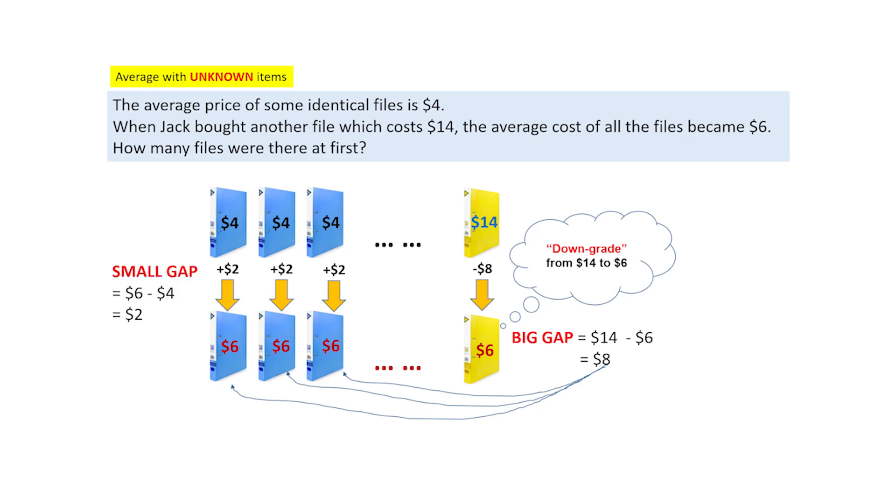When $8 is distributed to all the files and each file receives an extra $2, as you can see, we'll know that $8 divided by $2 will give you the answer 4. Which means that 4 files receive this extra $2.